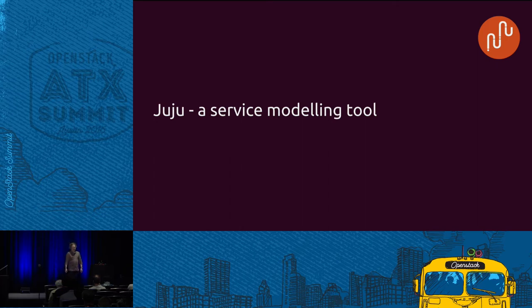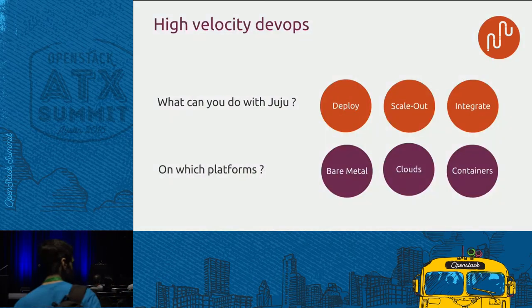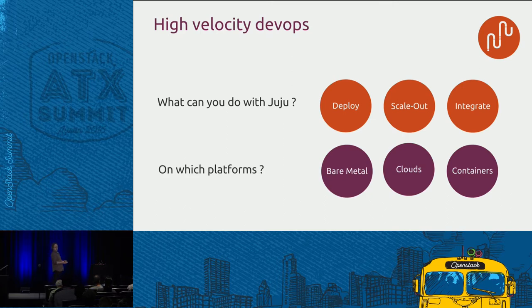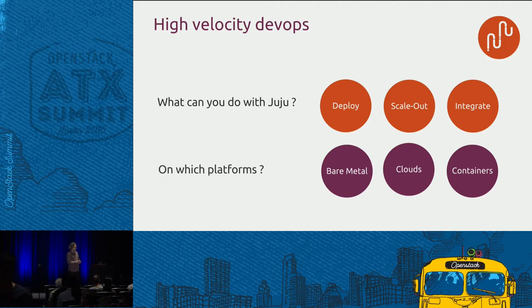Juju is the service modeling tool we've been working on at Canonical for probably about the last five years. It allows us to deploy services, scale them out, and integrate them together. Relations between services are very easy to model. We can use all those concepts and put them down on different providers — on bare metal, on top of clouds such as OpenStack, or in containers, which is the topic of this talk.